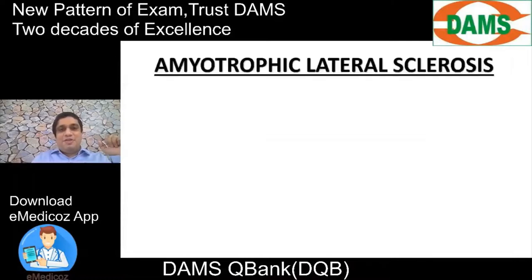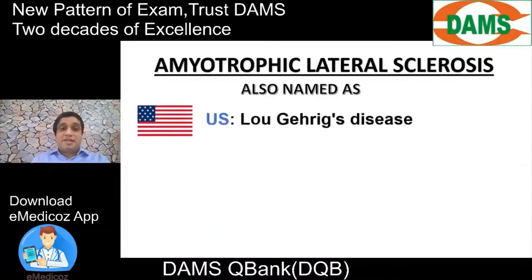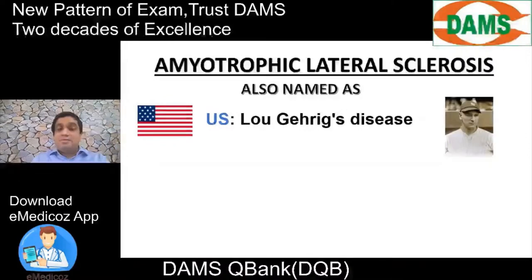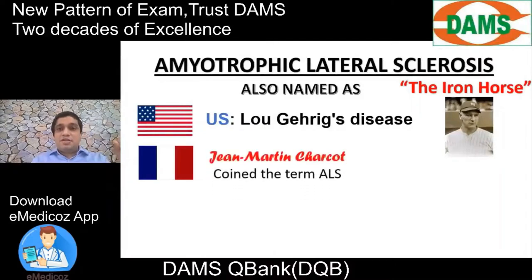Amyotrophic lateral sclerosis is also named in the United States as Lou Gehrig's disease, because Lou Gehrig, a famous baseball player who played for the New York Yankees, suffered with this and unfortunately died very young. He also received the title 'The Iron Horse.' In France, famous neurologist Jean-Martin Charcot coined the term ALS.